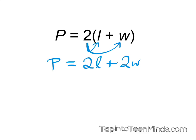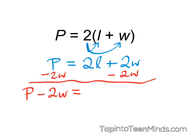Bringing the 2w term to the left side, or subtracting 2w on both sides, will leave us with p minus 2w equals 2l.